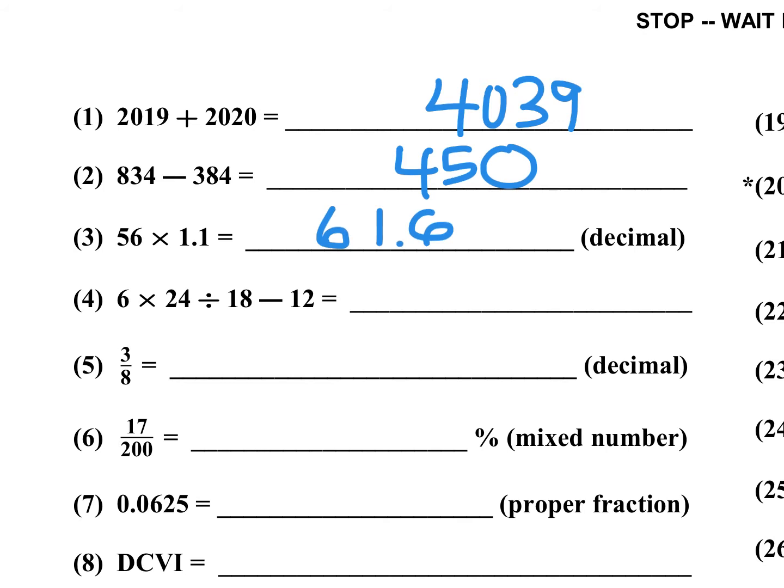Number four: 6 times 24 divided by 18, minus 12. Some students will take 6 times 24 is 144, divided by 18 is 8, then 8 minus 12 is negative 4. Alternatively, you could divide 6 by 18 to get 1/3, then take 1/3 of 24, which is 8, and 8 minus 12 is negative 4.